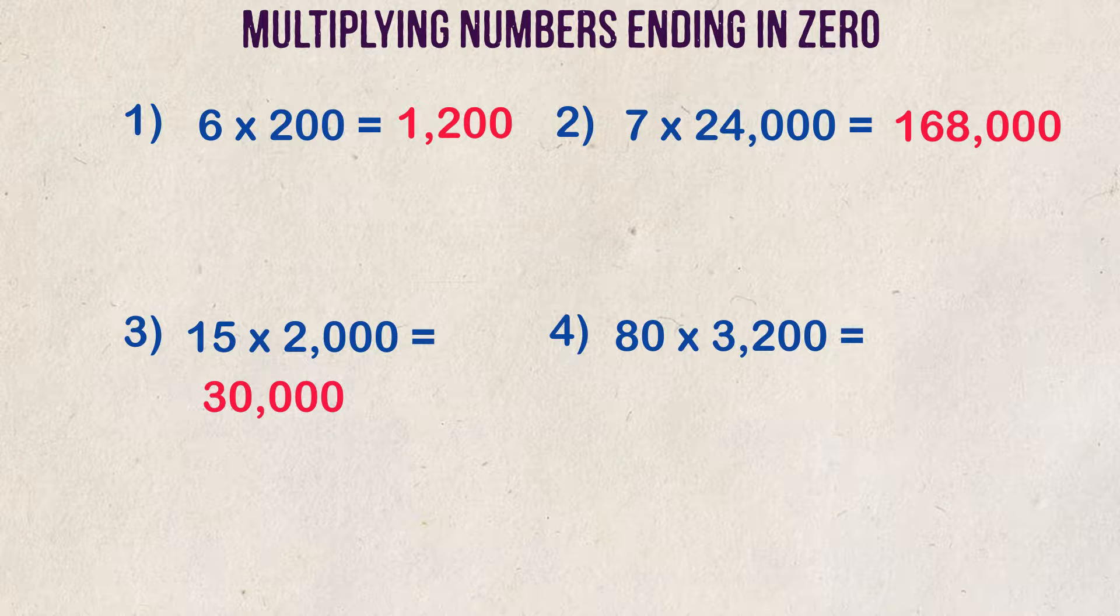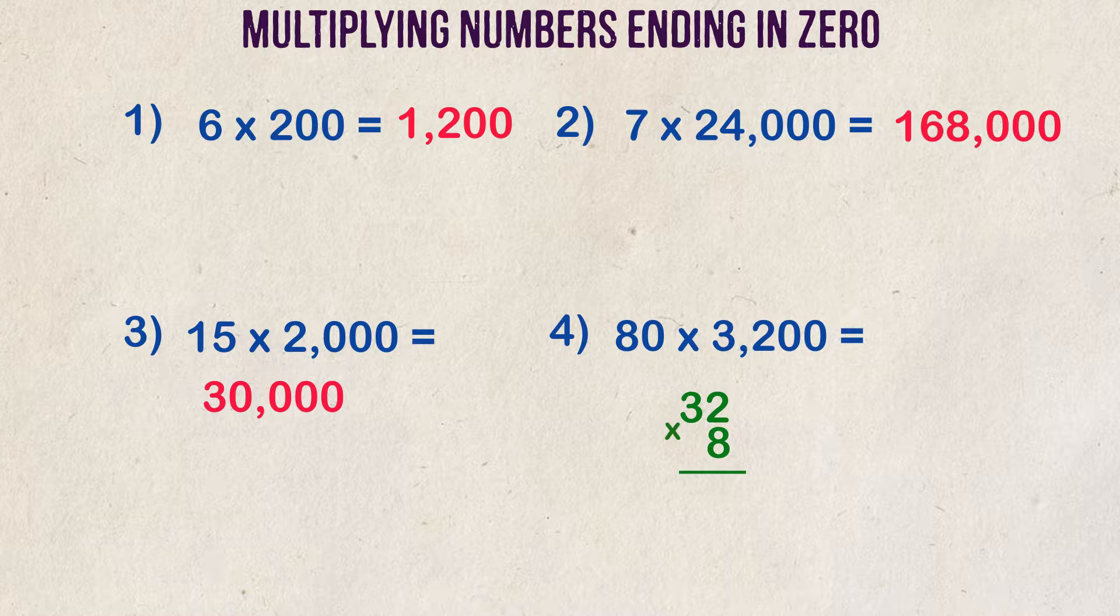Example 4: what is 80 times 3,200? First, we multiply 8 times 32. We can set it up this way, and we multiply 2 times 8, which is 16. We put down the 6 and carry the 1. Next, we multiply 3 times 8 and get 24. Let's add the one we carried over, and we get 25.